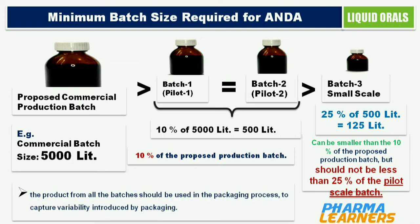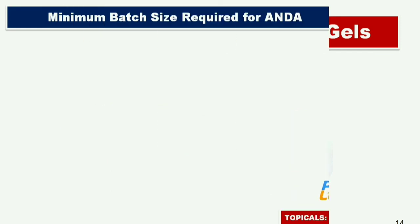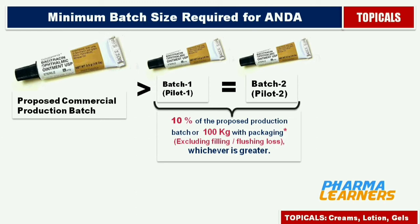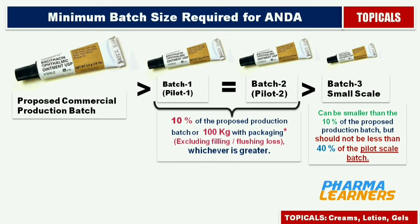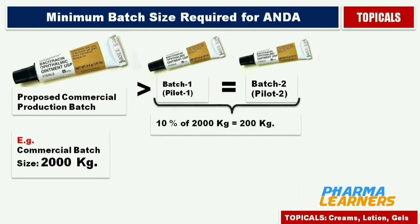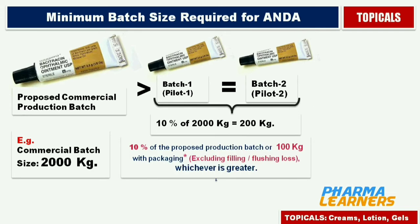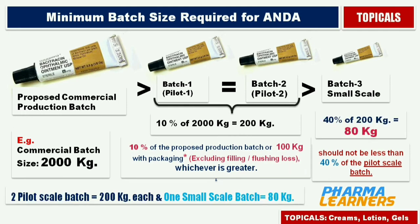For topical preparations — which includes creams, lotions, and gels — again, 2 out of 3 batches should be a minimum 10% of the proposed commercial batch or 100 kilograms, whichever is greater. Please note that these quantities exclude filling or flushing losses. The 3rd batch can be smaller than the proposed commercial batch but should not be less than 40% of the pilot batch. For example, if the proposed commercial batch size is 2,000 kilograms, then 10% of 2,000 kilograms is 200 kilograms. Since 200 kilograms is greater than 100 kilograms, the minimum quantity of the 2 pilot batches is 200 kilograms each. For the 3rd batch: 40% of 200 kilograms is 80 kilograms, so the 3rd batch will be 80 kilograms.